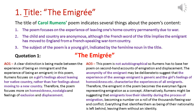It's quite important to note that the poem is not autobiographical, so Rumens has clearly had to base this poem on second-hand accounts of emigration and displacement. We can look at the anonymity of the emigrant as being deliberate — perhaps Rumens is suggesting that the experience of the average emigrant is similar, it's generic. Most emigrants will feel homesickness despite what's going on in their own home countries. The emigrant in the poem becomes the everyman figure; she represents emigration as a concept for anyone that's ever experienced it.